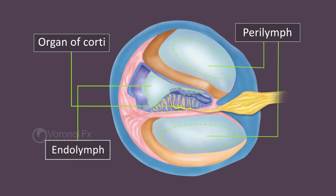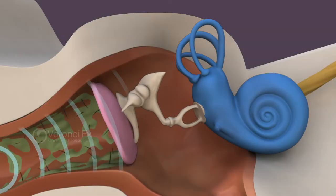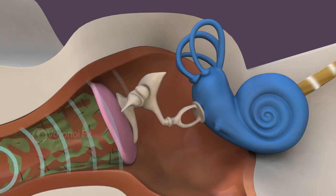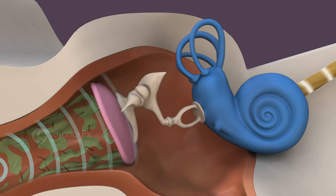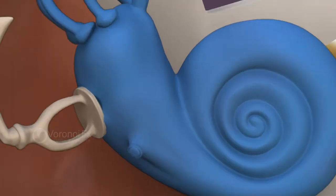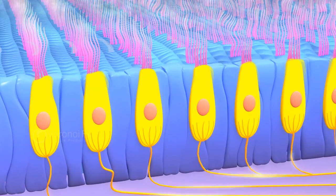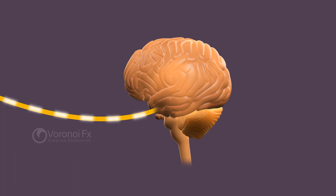Sound waves travel through the ear canal and strike the eardrum. The eardrum vibrates from the incoming sound waves and sends these vibrations to the three tiny bones in the middle ear. These bones amplify the sound vibrations and send them to the cochlea. Inside the cochlea, there are thousands of tiny hair cells in the organ of Corti. Hair cells change the vibrations into impulses that are sent to the brain through the auditory nerve. The brain tells you that you are hearing a sound and what that sound is.